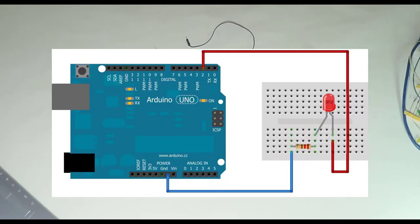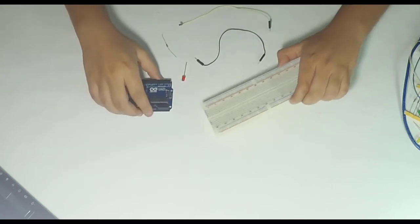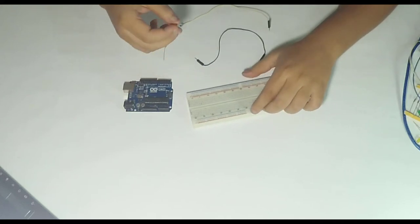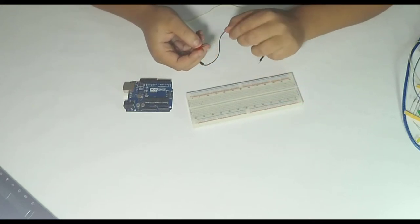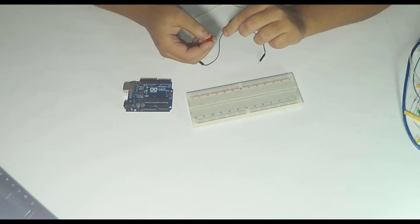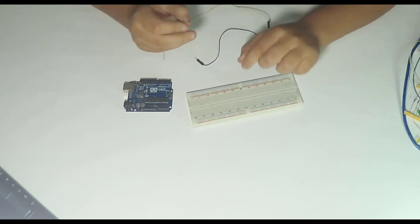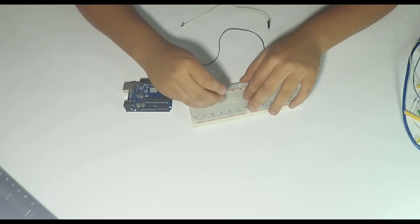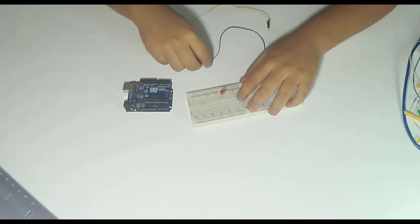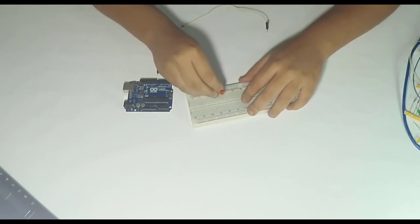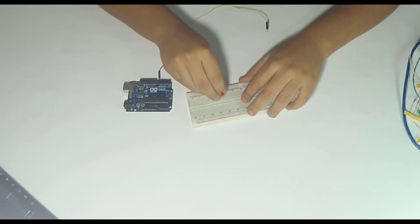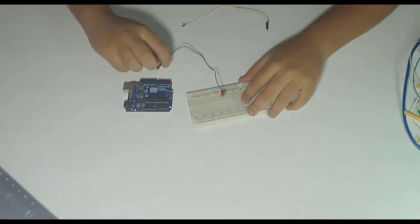So this is the schematic of the circuit I'm going to use. The LED has one anode and one cathode. The anode is the longest part here. We're going to place it like this and we're going to connect the anode to pin number two.